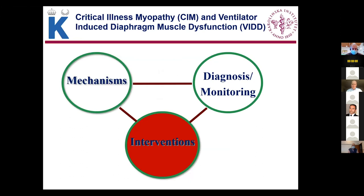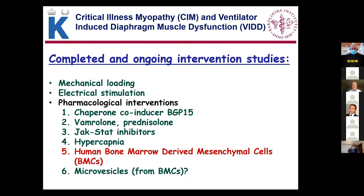Our current focus in these ICU patients and experimental models is testing different interventions. These include passive mechanical loading, electrical stimulation using implanted electrodes in the soleus muscle with stimulation padding schemes introduced by Terry Lomo, as well as pharmacological interventions. We are particularly interested in the chaperone co-inducer BGP-15. The reason we went for this intervention is that in our initial porcine ICU models, when function was compromised, heat shock proteins were typically downregulated, and we thought that inducing these heat shock proteins with this bi-specific chaperone co-inducer might have a positive effect.